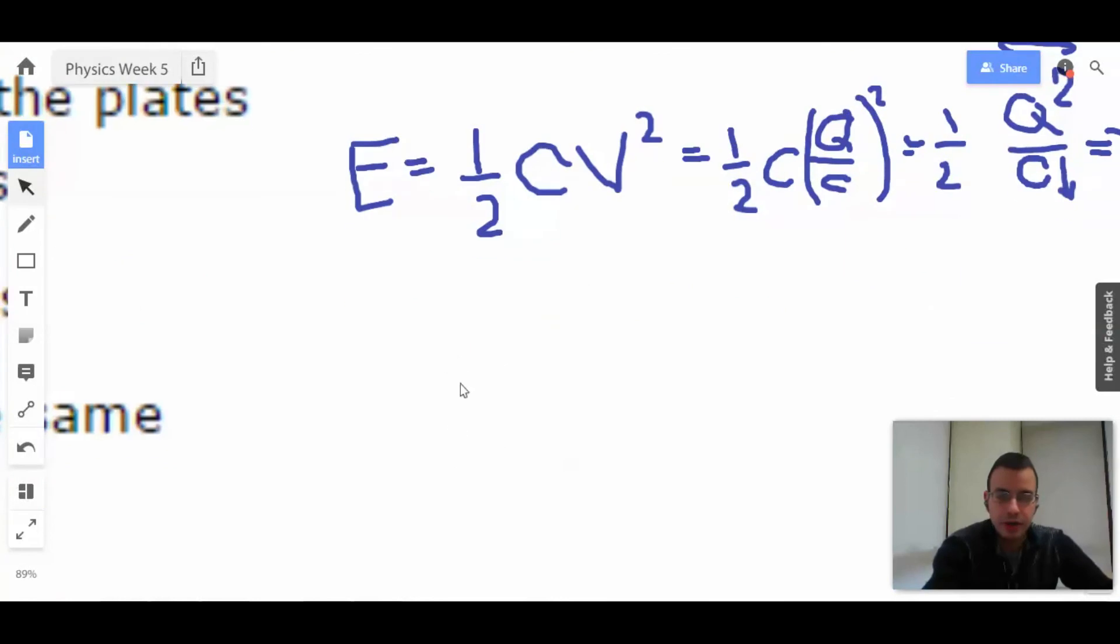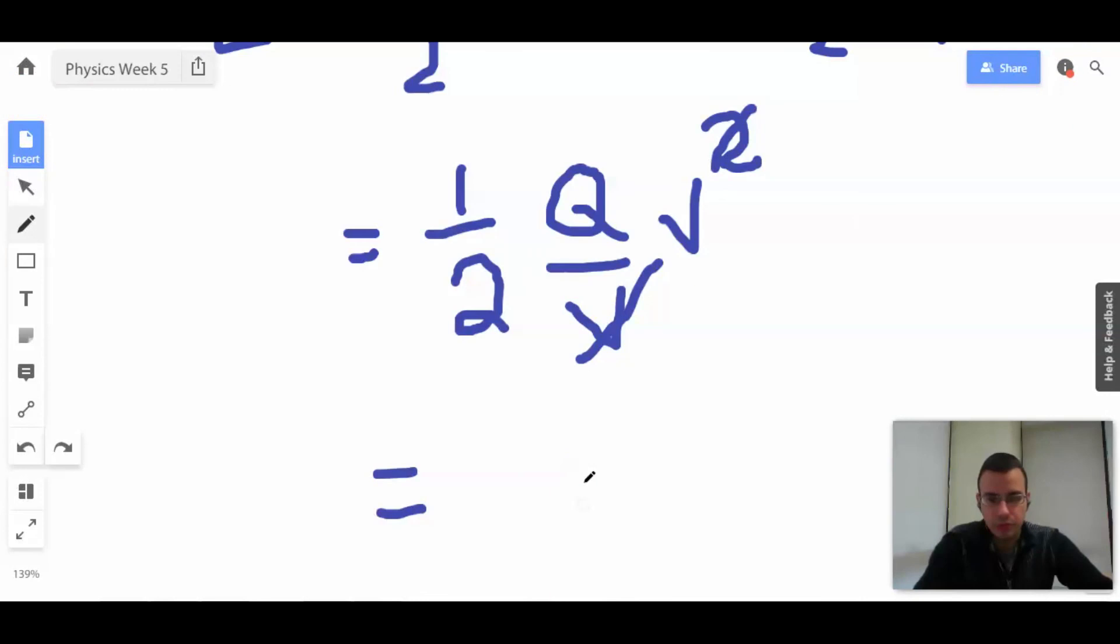All right. This is probably terrible boardsmanship. So, we know that C equals Q over V. Q over V. You know, V squared. We cancel out the squaring. And we get Q V over 2.